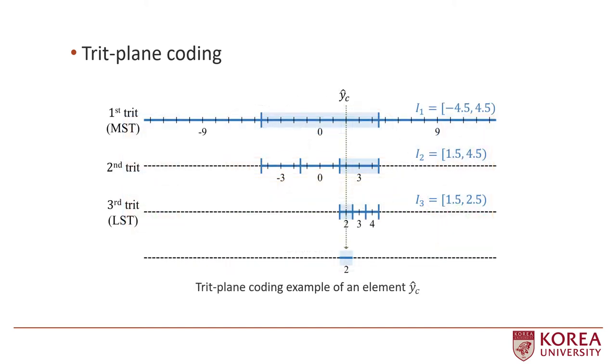This is an example of trit plane coding of one element. In the first trit plane, the element belongs to the mid interval, so trit 1 is encoded to a bit stream. Similarly, trit 2 and trit 0 are encoded for the second and third trit planes.